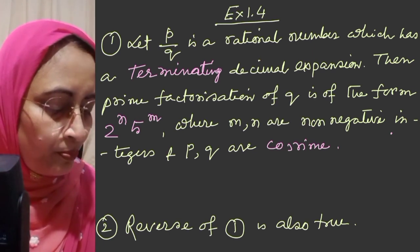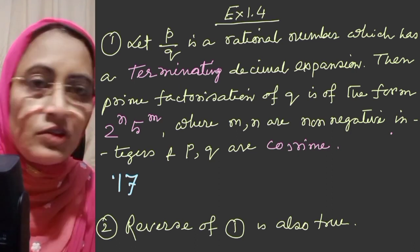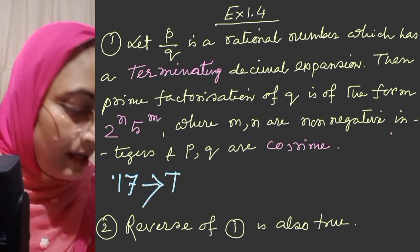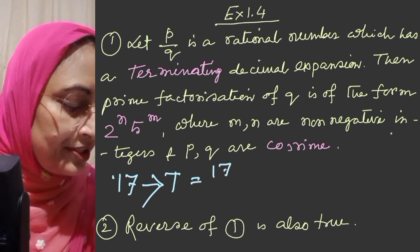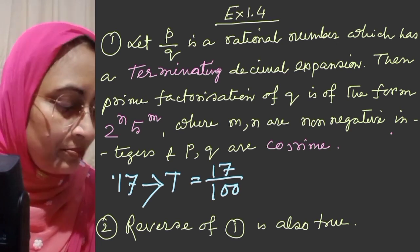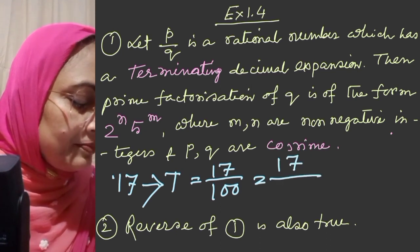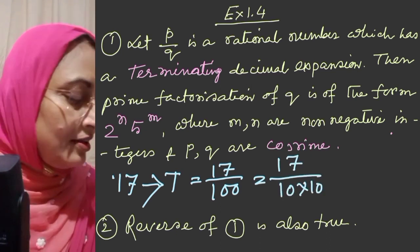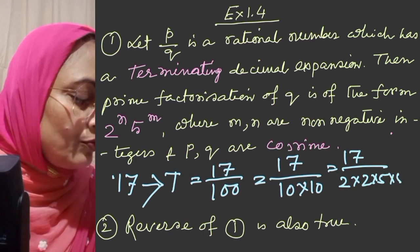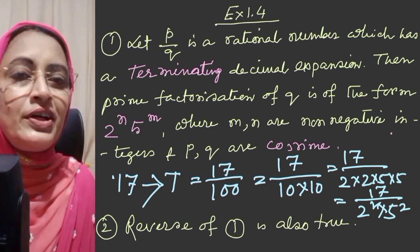For example, 0.17 is a terminating decimal. We can write it as 17 by 100, which equals 17 by 10 into 10, which equals 17 by 2 into 2 into 5 into 5 — that is 17 by 2 squared into 5 squared. So the denominator is in the form 2 to the power n into 5 to the power m, confirming it is terminating.